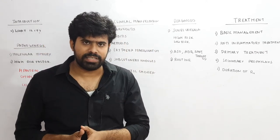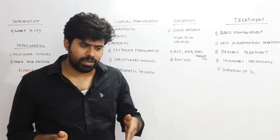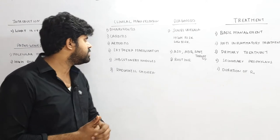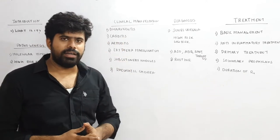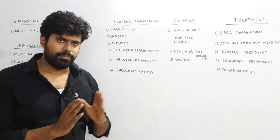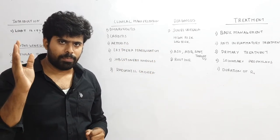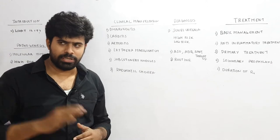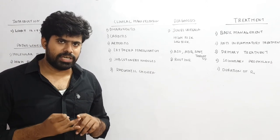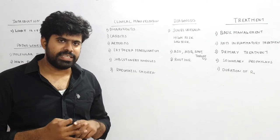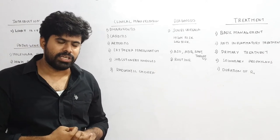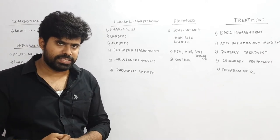Once the patient has pharyngitis, one to two weeks later they will develop manifestations of rheumatic fever, including carditis. Carditis in rheumatic fever is a pancarditis — meaning there will be pericardial inflammation, myocardial inflammation, and endocardial inflammation. Pericardial inflammation can present as chest pain, a frictional rub on auscultation, and ECG shows concave ST elevation and PR depression.